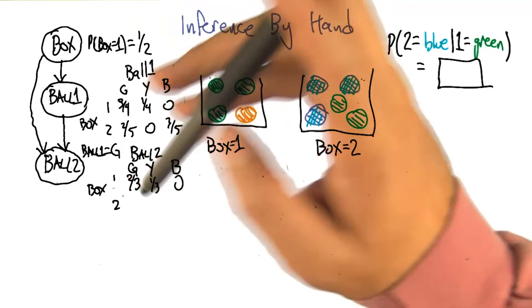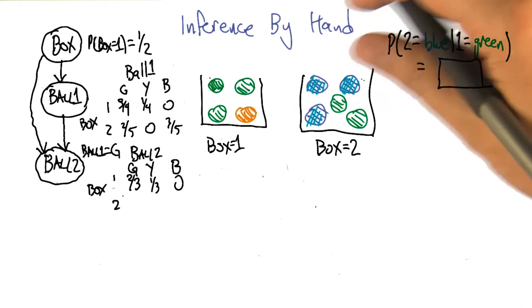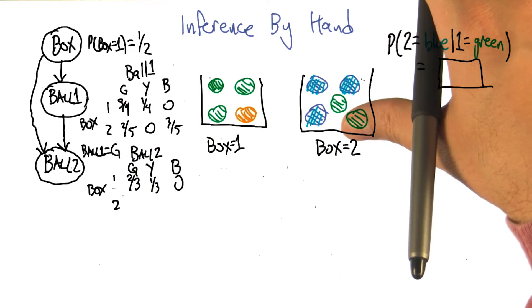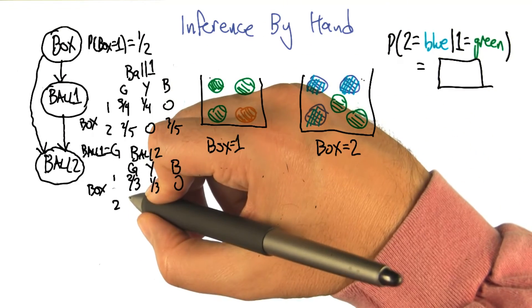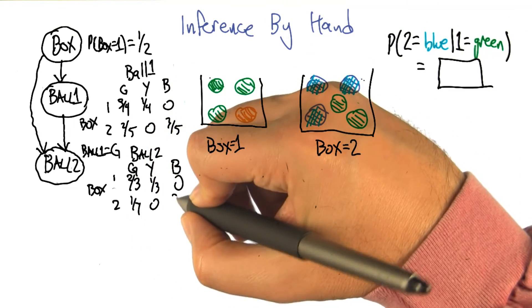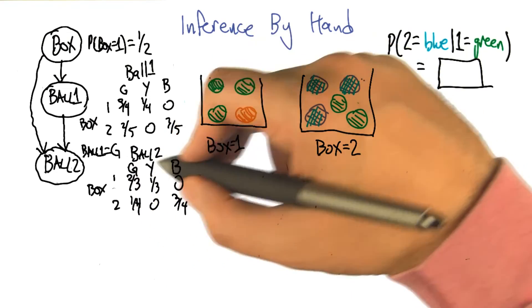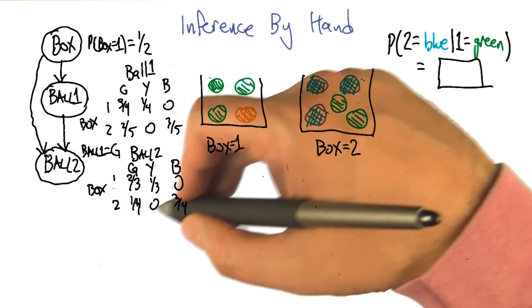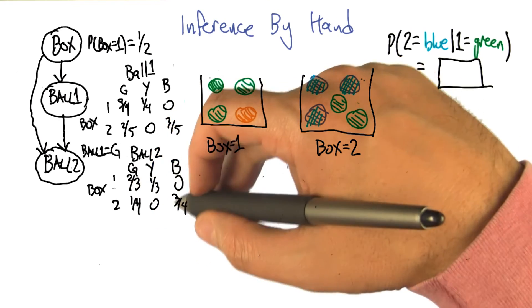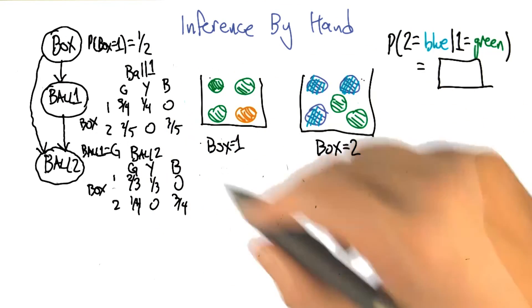But on the other hand, had we drawn from box two first, and again, we had gotten green, now it's green one-fourth, zero yellow, and blue three-quarters. Right. And yeah, we need the same thing for the other case where ball one is yellow and ball one is blue, but we're not going to need those numbers for this problem.